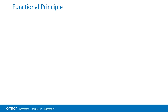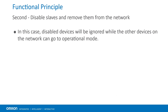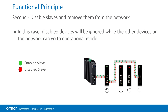The disable function can be implemented in two ways. First, disable slaves while the devices are physically present on the network — in this case, disabled devices will be set to pre-operational mode while other devices on the network can be set to operational mode. Second, disable slaves while the devices are removed from the network — in this case, disabled devices will be ignored while the other devices on the network can go to operational mode.